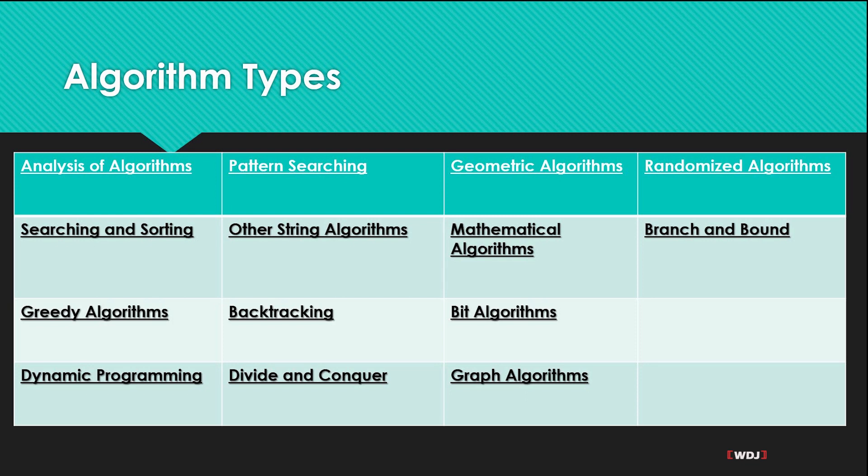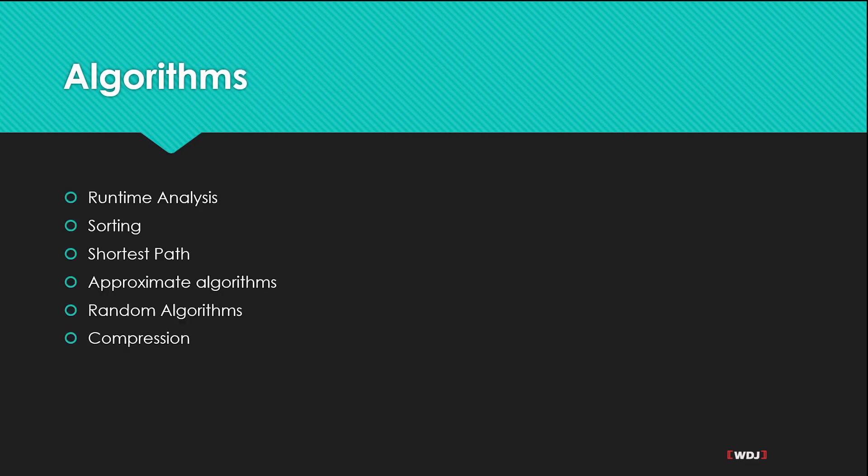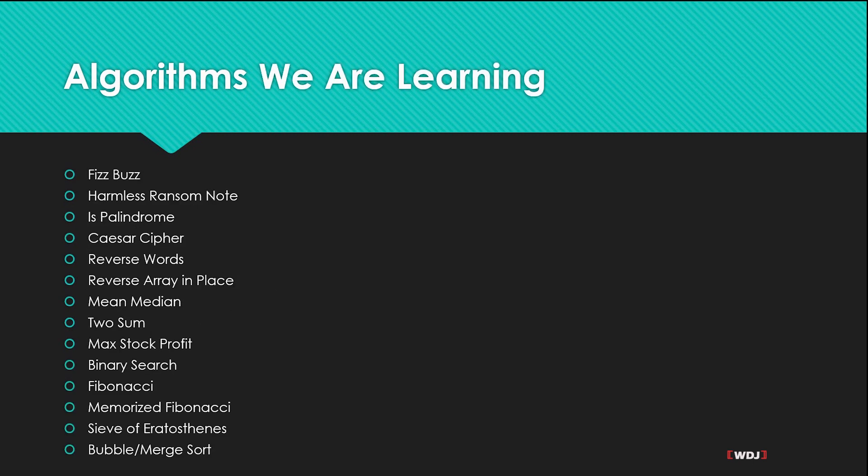Here are the reasons why we should use algorithms: runtime analysis, you want it fast, sorting, shortest path, approximate algorithms, random algorithms, and compression of data. These are the most common ones or reasons why you should actually be using algorithms.